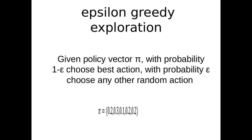In Deep RL, this behavior can be simulated with epsilon-greedy exploration. Your policy network outputs a policy vector assigning a probability to each action. Exploitation means you choose the action with the highest probability. Exploration means that with probability epsilon you take a random action other than that with the highest probability. This way you ensure you are not getting stuck in a region of the optimization space.